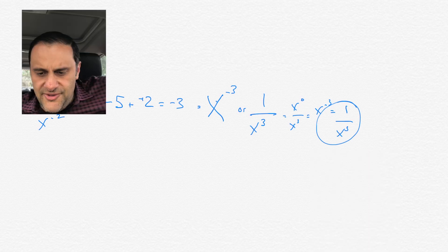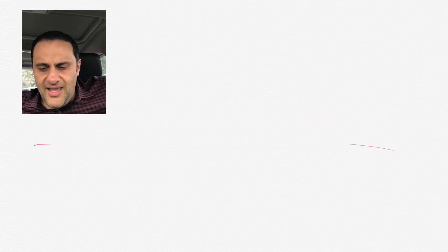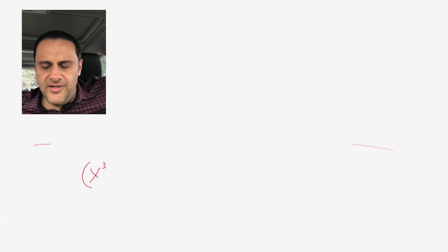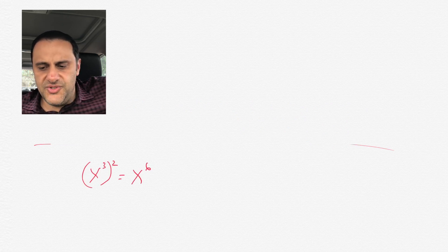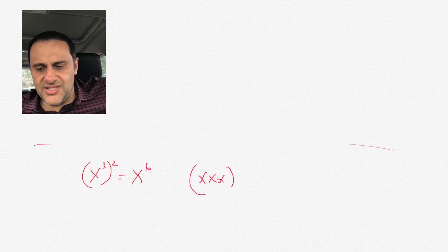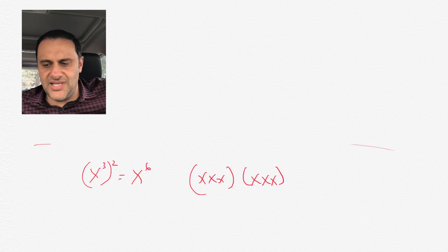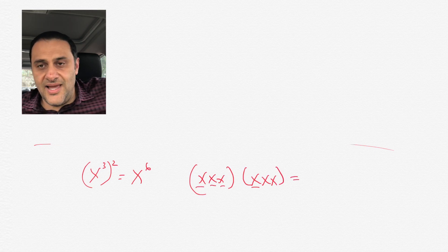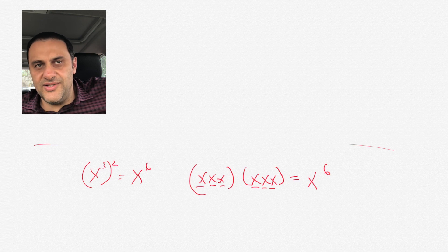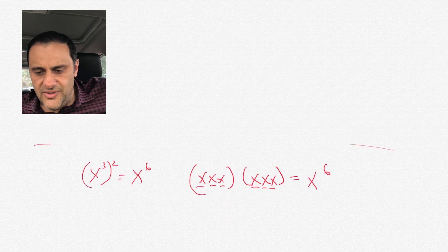Another example: let's say you have x cubed squared. Here you would actually just multiply the 3 and the 2, so you get x to the 6. The reason is that x cubed squared is like having x cubed — which is x, x, x — and you multiply that by itself, which is x, x, x. So as you can see, you have 1, 2, 3, 4, 5, 6 x's, so that's x to the 6. That's why you multiply those exponents.